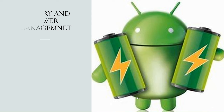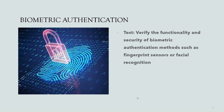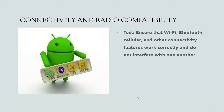Next and our last category is battery and power management. This category includes thousands of test cases which ensure that the device's power management system optimizes battery life and performance effectively. If users experience poor battery life or power management related issues, the manufacturer has to take sole responsibility and fix these. So these were the different categories: biometric authentication, battery, display and screen compatibility, custom software features, connectivity and radio, and camera.